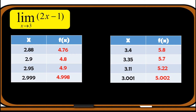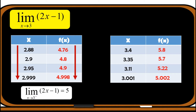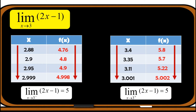After completing the table of values from the left and from the right of the independent variable being approached, which is 3, we need to observe what is happening to the given values. As we approach 3 from the left, the values of f(x) are getting closer and closer to 5. So the left-hand limit is equal to 5. For the right hand, as we observe the values of x approaching 3 from the right, the values of f(x) are also approaching 5. Therefore, the right-hand limit is also equal to 5. So we can now conclude that as the values of x get closer and closer to 3, the values of f(x) get closer and closer to 5. The limit of 2x minus 1 as x approaches 3 is equal to 5.